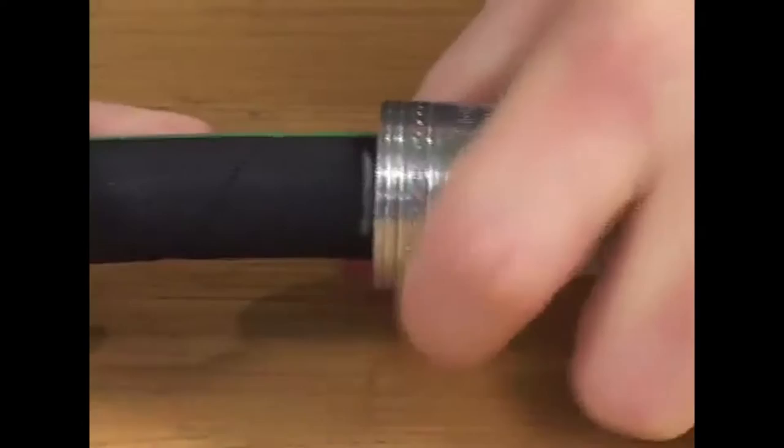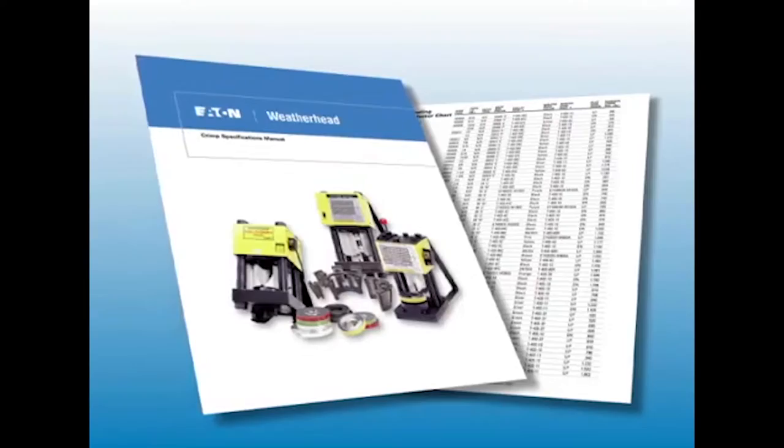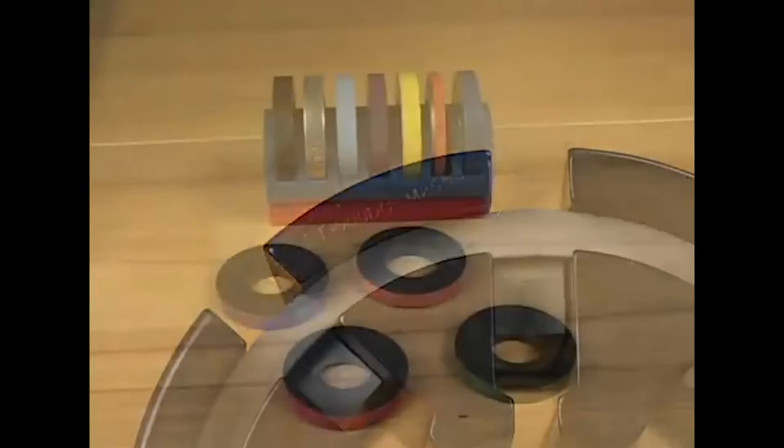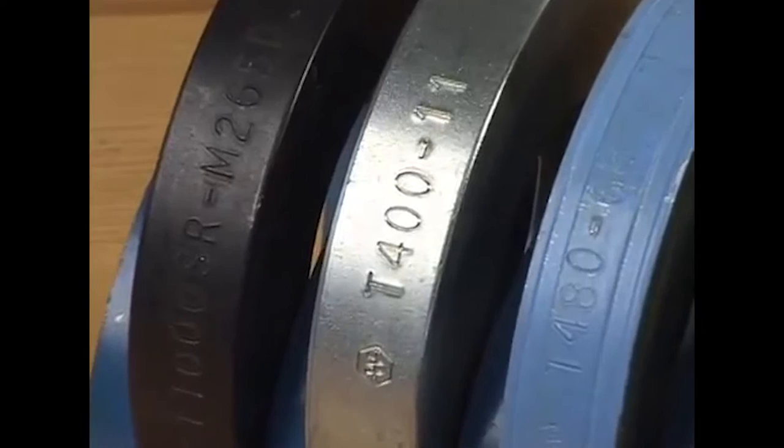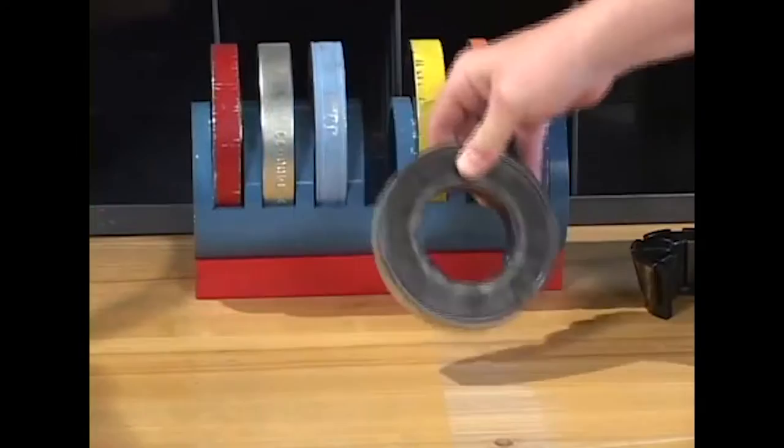Next, refer to the crimp specification manual for the correct collets, spacer ring, and spacer ring position. Some hose types do not require the use of a spacer ring. Collet part numbers are stamped on the top of each collet half. Spacer rings are color coded, and they are also stamped with a part number for easy identification. The proper Weatherhead tooling must be selected for each model of press.